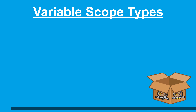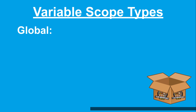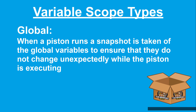The second variable scope is global. Global variables are shared among all pistons and can be interacted with by all pistons within your WebCore instance. A global variable will always start with an at symbol. Any changes made to a global variable by any piston will be available for the next run of all other pistons within the same WebCore instance. When a piston runs, a snapshot is taken of the global variables to ensure that they do not change unexpectedly while the piston is executing.